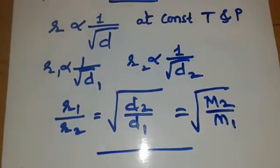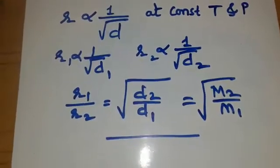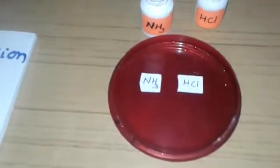Now I am going to demonstrate this law with the help of an experiment. For doing the experiment, I need two chemicals: ammonia — ammonia is here — and concentrated HCl. I will place a drop of ammonia on a plastic cap. This is ammonia. You can see the droplet here — the ammonia droplet.